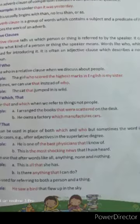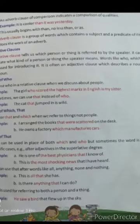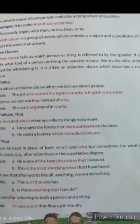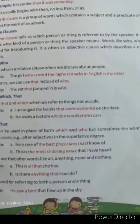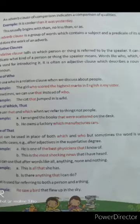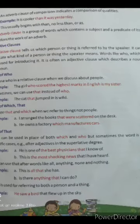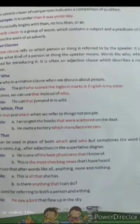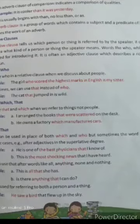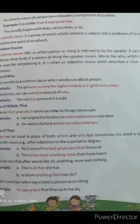Use of 'who': we use 'who' in a relative clause when we are talking about people. For example, 'The girl who scored the highest mark in English is my sister.' The word 'who' is referring to the girl. Sometimes we can also use 'that' instead of 'who' — for example, 'The cat that jumped is in the well.'